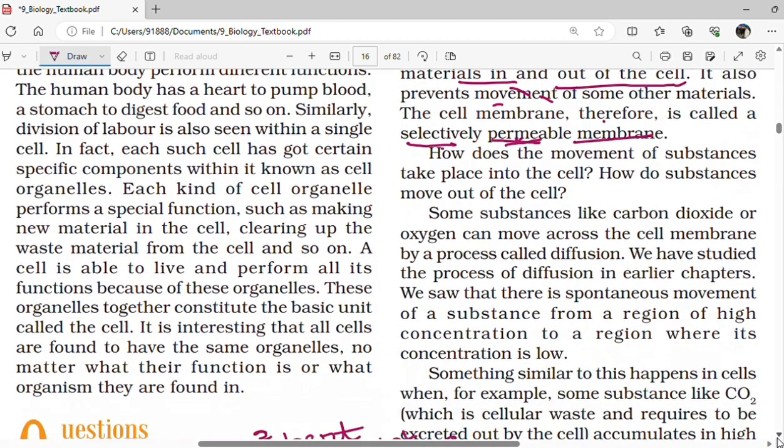Some substances like carbon dioxide, CO2 is not necessary for us, and oxygen can move across the cell membrane by a process called diffusion. By the process of diffusion CO2 will be moved and oxygen will enter into the cell. What is diffusion? We have studied the process of diffusion in earlier chapters.